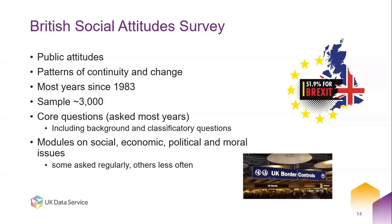A couple of examples of commonly used surveys: the British Social Attitudes Survey looks at public attitudes across Britain and is good for looking at patterns of continuity and change over time. It is an annual survey that has been run every year apart from two since 1983. The sample is approximately 3,000 people every year. It's made up of core questions including background and classificatory questions, plus modules on various social, economic, political, and moral issues — some asked regularly, some intermittently.